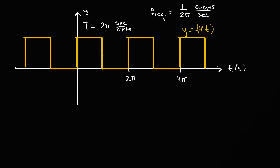And what we're going to explore in this video is can we take a periodic function like this and represent it as an infinite sum of sines and cosines of different periods or different frequencies. So to write that out a little bit more clearly, can we take our f of t?